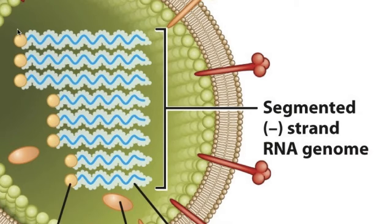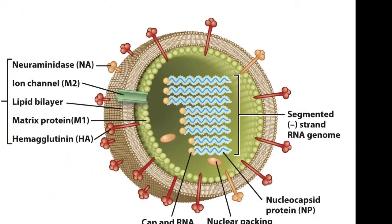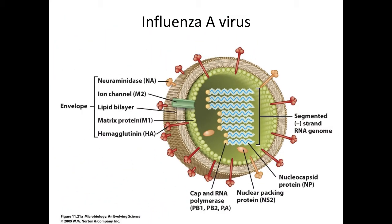Inside of there are the segmented negative-stranded RNA genome, and each one of these will have a polymerase on it. This RNA polymerase is made of PB1, PB2, and PA. It also has a 5' cap, and you'll find out how they get that as we talk about the virus.